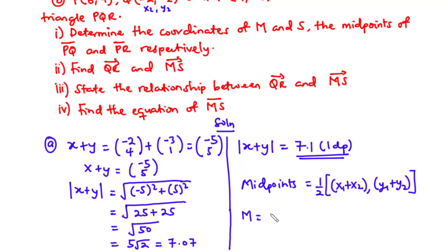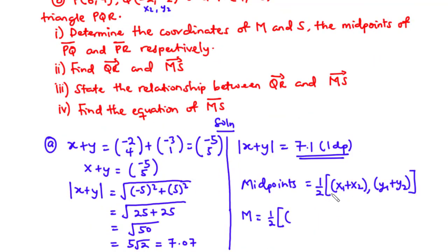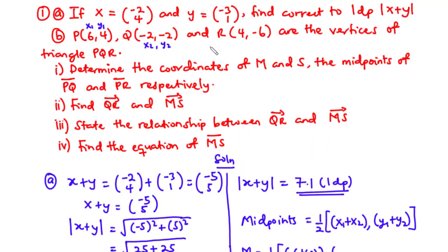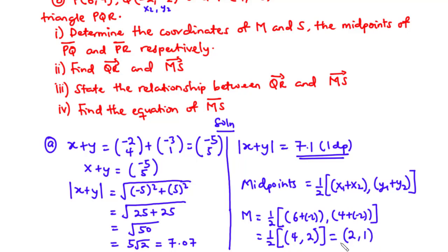Using the midpoint formula, M equals ½ times (x₁ + x₂, y₁ + y₂). With x₁ = 6 and x₂ = -2, and y₁ = 4 and y₂ = -2, we get ½(6 + (-2), 4 + (-2)) = ½(4, 2), so the coordinates of M are (2, 1).